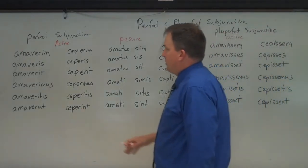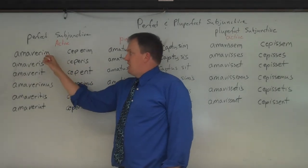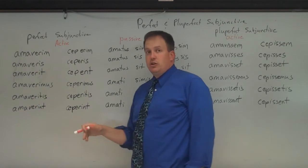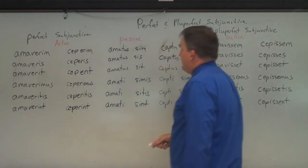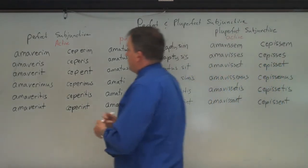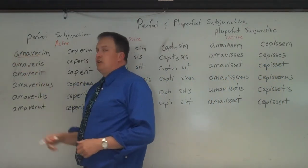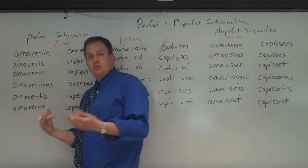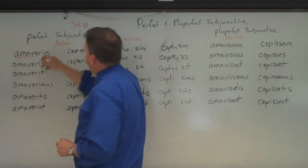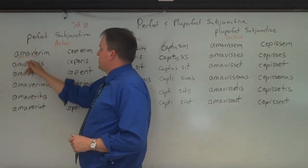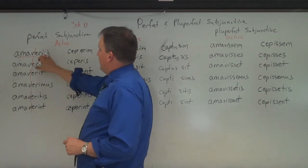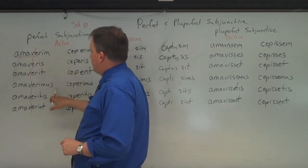So if you look here at the perfect subjunctive, you would just most of the time translate as I loved or I have loved. Ceperim, I took, I have taken. Now the question people have, the thing we're focusing on is how do you form this? Well, the perfect subjunctive, like all in the active, you always use the third principal part. So you always take the third principal part and then you add to the stem, you chop off the I to get the perfect stem, and then you add erim, eris, erit, erimus, eritis, erint.